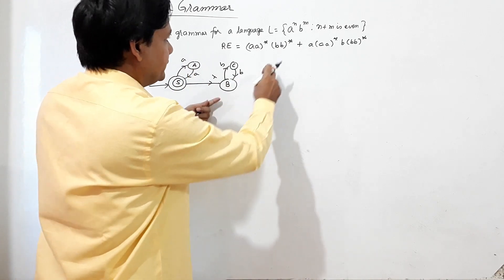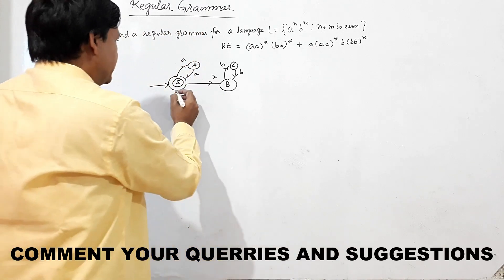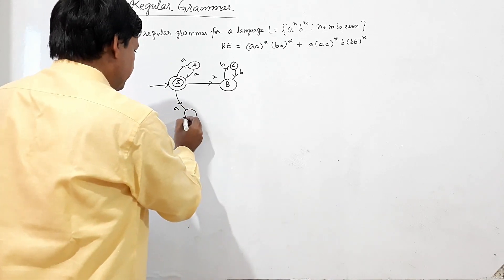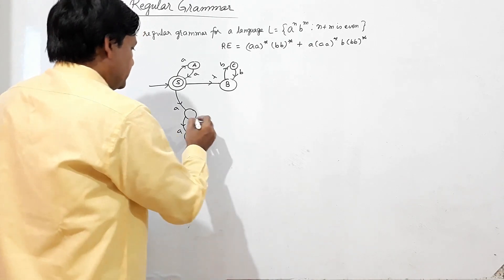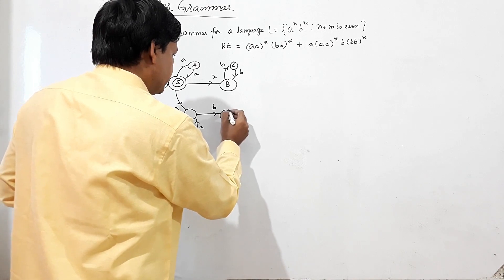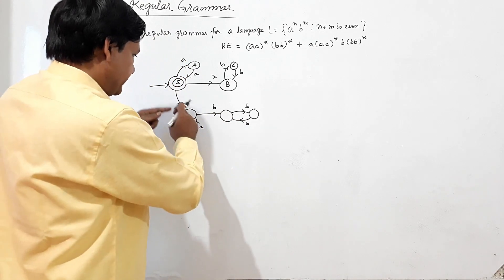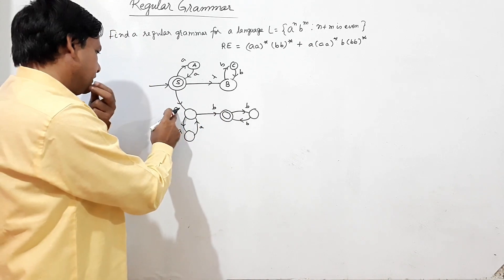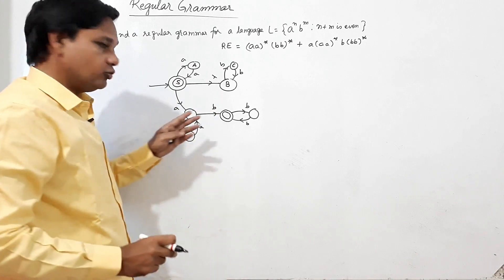Taking lambda, if b is there, there will be no a after getting one b. If one a comes, taking one a and coming to this state, it will loop on a. Then if one b comes, it will take any number of b's. Taking only one a and one b, it should be accepted because the number of a's plus number of b's — that is 1 plus 1 equals 2 — should be accepted.